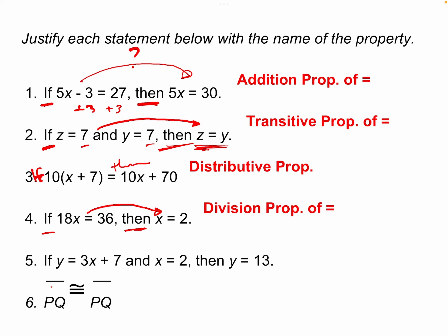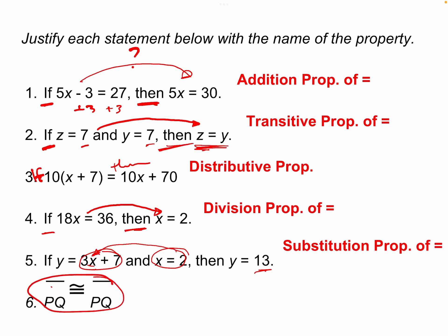Number five: if y equals 3x plus 7, then x equals 2, then y equals 13. What we had to do was take x equals 2 and plug it in. We don't have a 'plug-in property,' but we do have a substitution property of equality. We substituted 2 for x and then evaluated 3x plus 7 to get 13. Our last one says segment PQ is congruent to segment PQ — the same thing on both sides. That's the reflexive property of congruence. We use congruence because we have a congruency symbol, and that's one of our three properties of congruence.